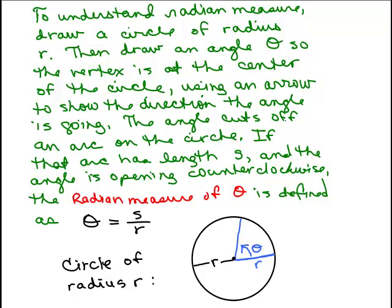The angle cuts off an arc on the circle. What I'm talking about here is this right here. I'm going to show that with an arrow as well for now, even though it's just the length. I'm going to call that S. So here's the picture. Hopefully you're okay so far.